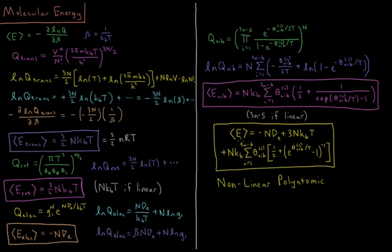Combining all contributions, the average energy of a general nonlinear polyatomic system of n molecules is: −n·De (electronic) + 3/2 · nkT (translations) + 3/2 · nkT (rotations, or nkT giving 5/2 · nkT total for linear molecules) + nk · Σ_i θ_vib,i · [1/2 + 1/(e^(θ_vib,i/T) − 1)] (vibrations). This shows how the partition function of a general system of n noninteracting nonlinear polyatomic molecules leads directly to the average energy.